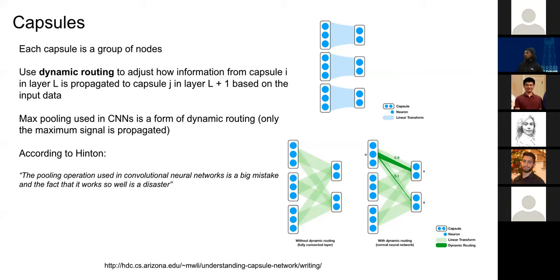Capsule networks have a bespoke algorithm for calculating dynamic routing, adding some complexity. The Hinton paper suggests that max pooling is a type of dynamic routing — where if we max-pool over four neurons we only propagate the maximum value to the subsequent layer. However, Jeffrey Hinton is strongly opposed to max pooling, believing it's a crude way to do dynamic routing and that there are probably superior alternatives. This paper is partially an attempt to correct that issue.